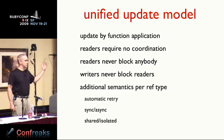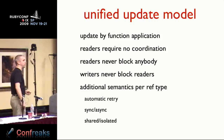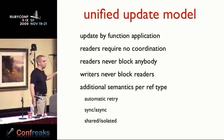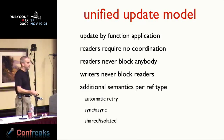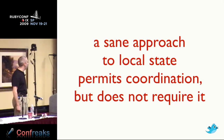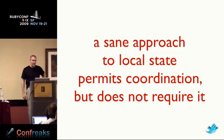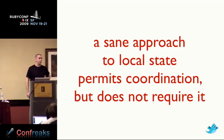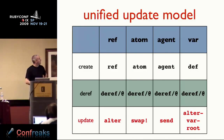The unified update model: update by function application. Readers don't coordinate, readers don't block, writers don't block readers. There are additional semantics depending on the reference type. If the reference type coordinates across multiple references, you also get automatic retry behind the scenes — very much like database concurrency. If two things try to do different things at once, the system makes it right automatically. A sane approach to state permits coordination but does not require it. This unified update model applies across all the different reference types Clojure provides.